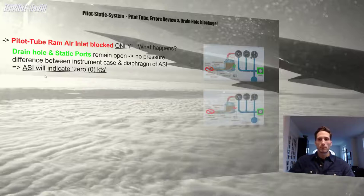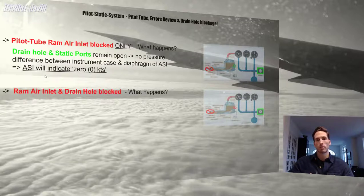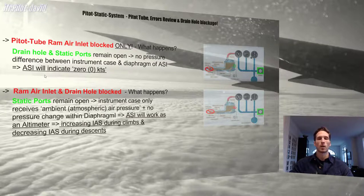Problem number two: what happens if we have the Ram Air Inlet and the drain hole blocked, but not the static ports? In this case, our airspeed indicator will just work as an altimeter, showing an increase in airspeed as we climb and a decrease in airspeed as we descend.